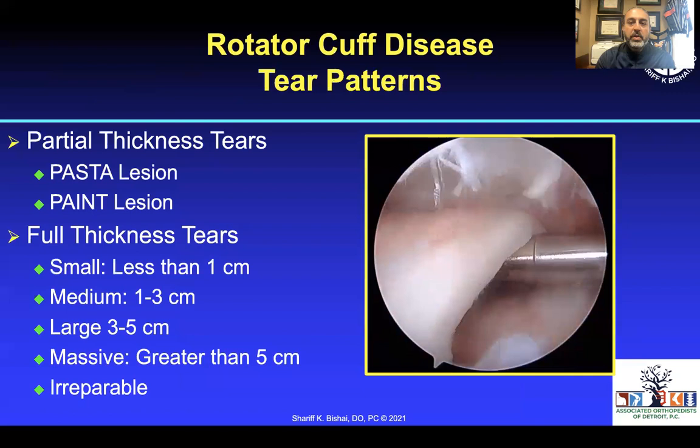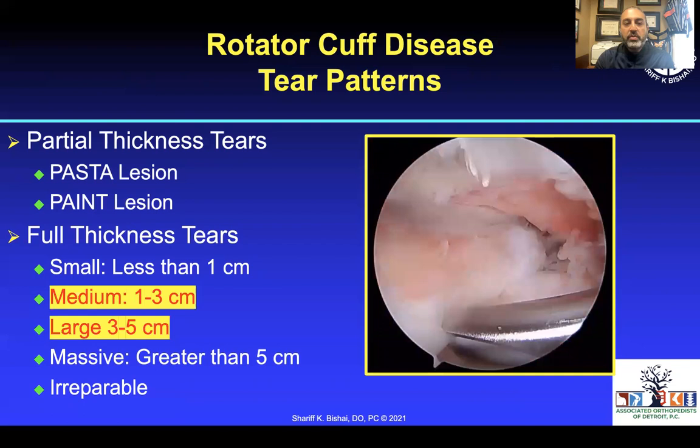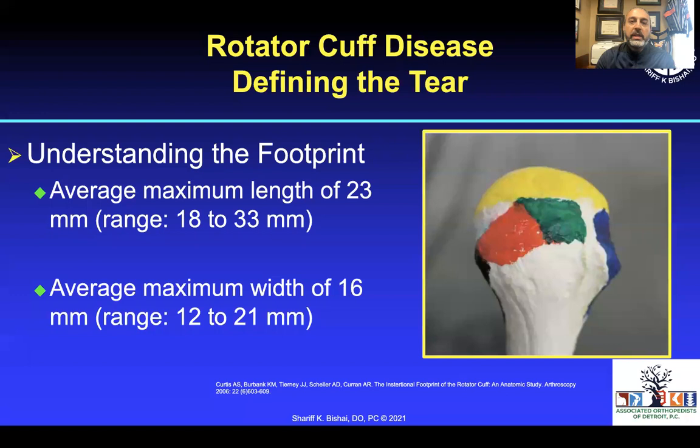With rotator cuff tears, as with every other orthopedic-type injury, there are different sizes and types. Today, my charge is to discuss the medium and large-type injuries. We need to understand where the rotator cuff needs to go back to — the anatomic position. Alan Curtis and his group did this paramount study that really looked at the appropriate position of the rotator cuff, and it's important to restore it to its normal position for proper tendon and muscle complex function.